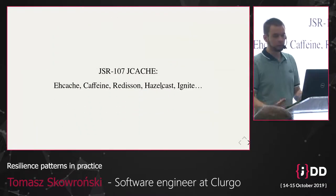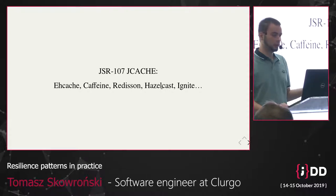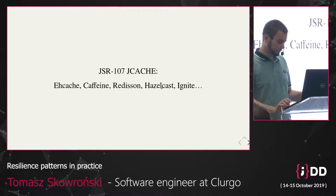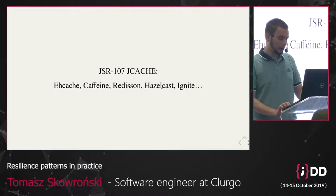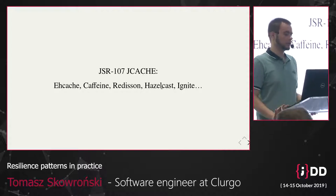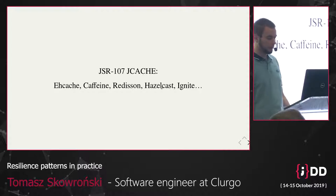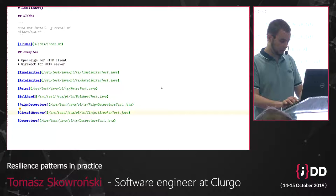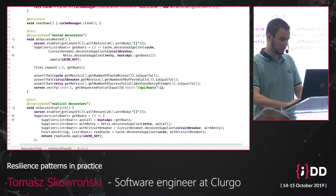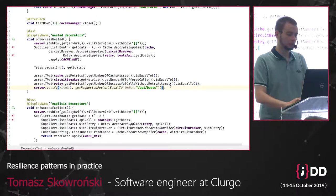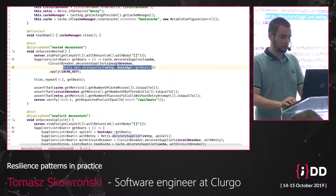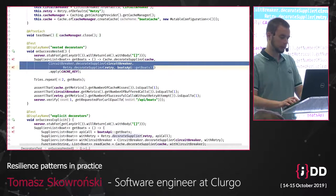Cache is also an important part of resilience. If you have an idempotent method, you probably don't need to call it again in a short time. Resilience4j doesn't provide a custom cache — it integrates with JCache, so if you use a JCache implementation you can use it with Resilience4j as well. Now I'd like to show you not cache usage itself, but how to combine multiple patterns, because you can do it in a few different ways. You can write code that creates a retry, then decorates with circuit breaker, then with cache.